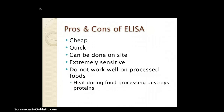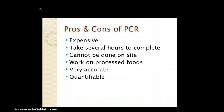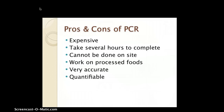Pros and cons of PCR: it is expensive, it does take several hours to complete, and cannot be done on site. However, it works on processed foods, and it is very accurate and quantifiable. Compared to ELISA there are many negative factors — in practice, we don't always have the money or time, and we need results fast to determine whether foods are genetically modified or not.